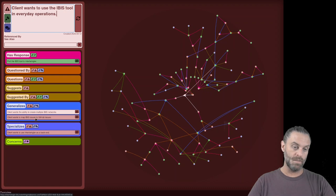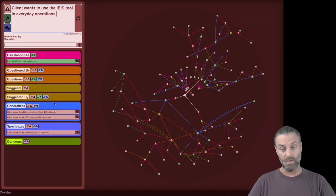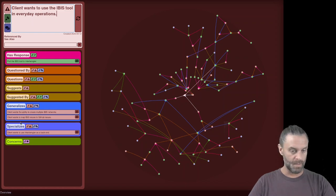These are particularly what the client wants to do. So client wants the ability to create multiple IBIS networks. Client wants to map IBIS issues to GitHub issues. Those are capabilities. Those are, for all intents and purposes, features. And so those are subsidiary. This thing in the middle generalizes these two things. And I really need to make that light up again, but that's a low priority compared to all the other things that are very high priority.